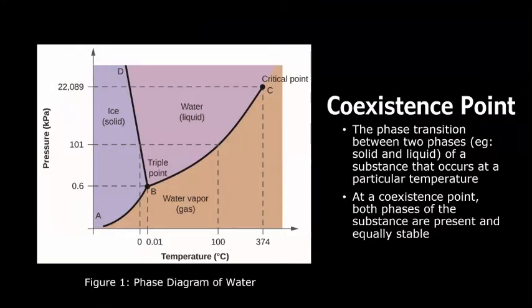A coexistence point is the transition between two phases of matter. Think melting or boiling point. It occurs at a particular temperature that varies with pressure.